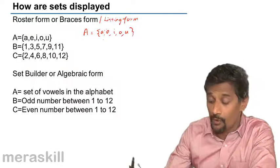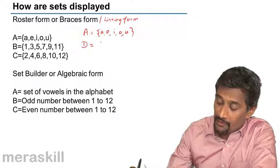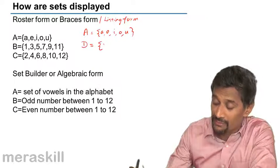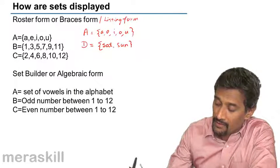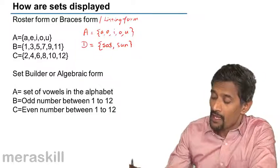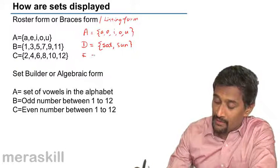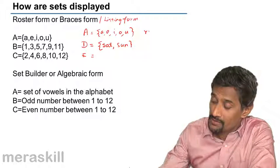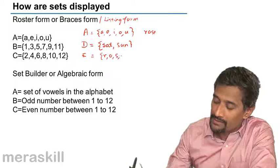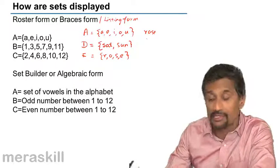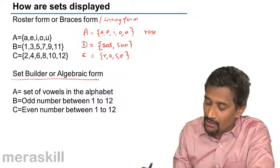Similarly, if we are talking about the weekend days, you write the elements: Saturday and Sunday. And if you list the letters in the set of letters in the word ROSE, you write it as R, O, S, E. So we are actually listing down the elements.